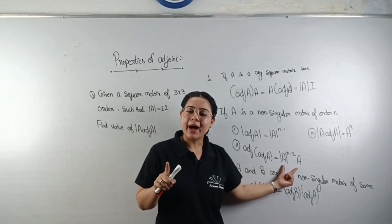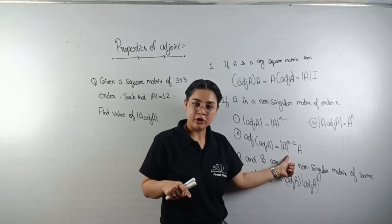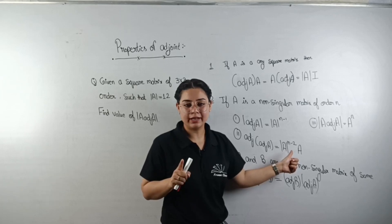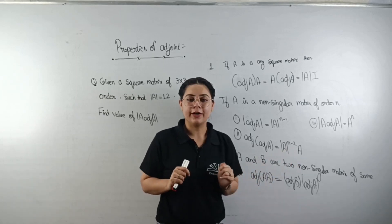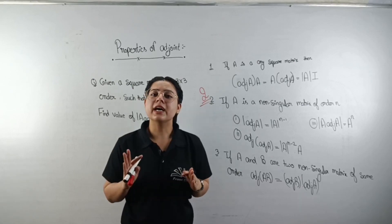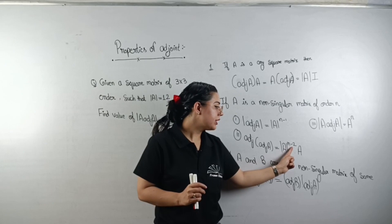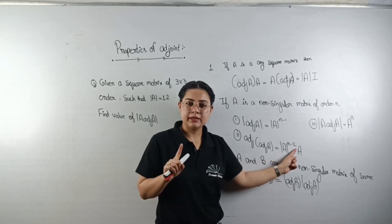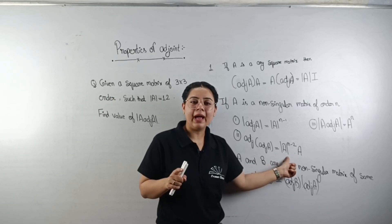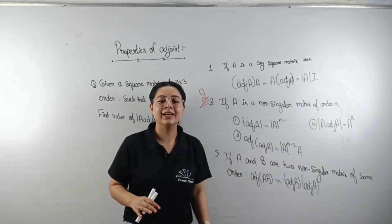To find |adj(adj(A))|, first calculate the determinant of the matrix, which is |A|. Then apply n−2 as the power. For a 3×3 order matrix with determinant 8, you write 8 to the power of (3−2), which means 8 to the power of 1, which is just 8. Then multiply this with your matrix to get the answer.